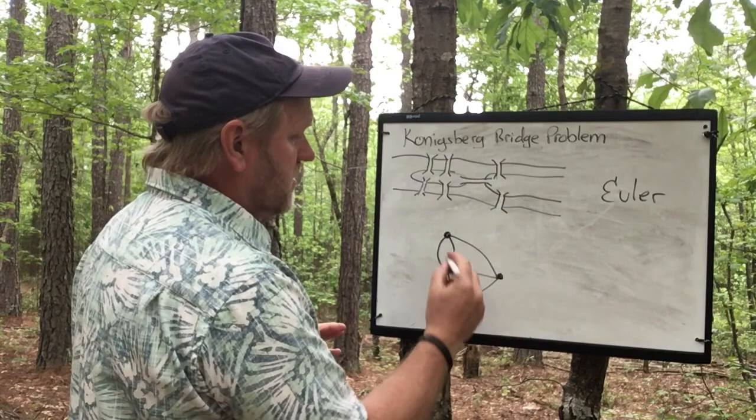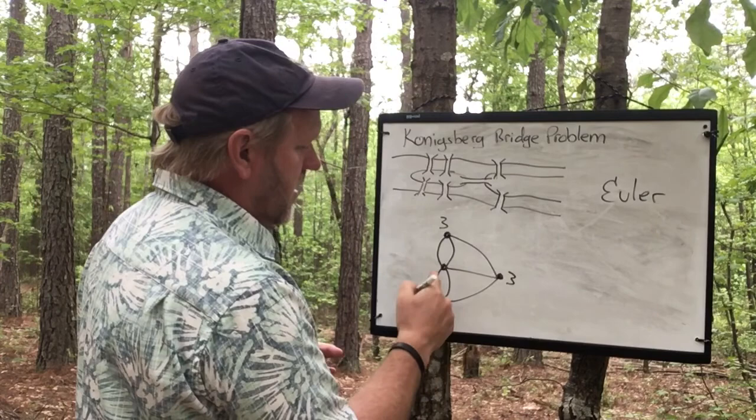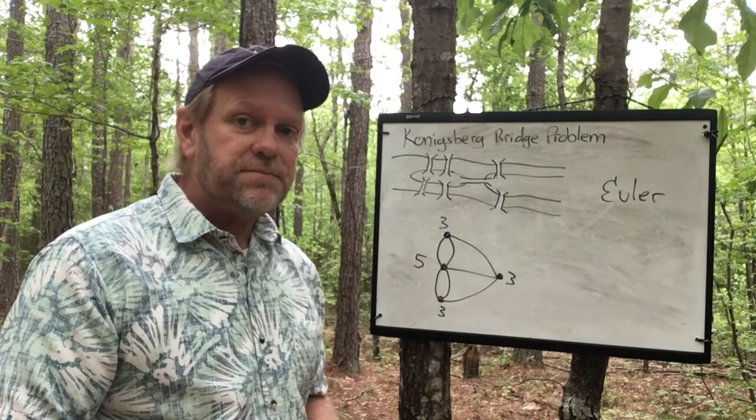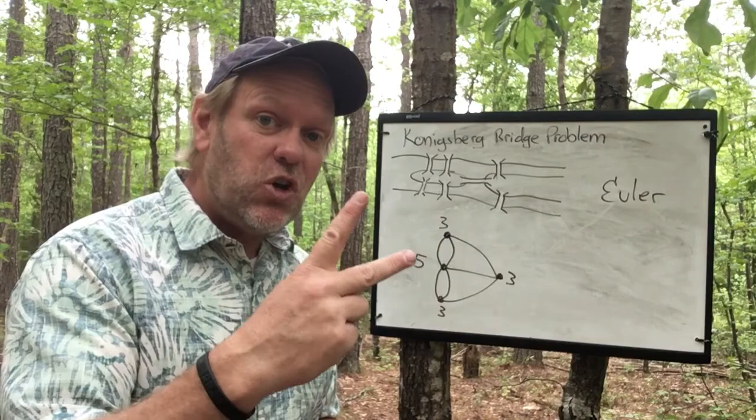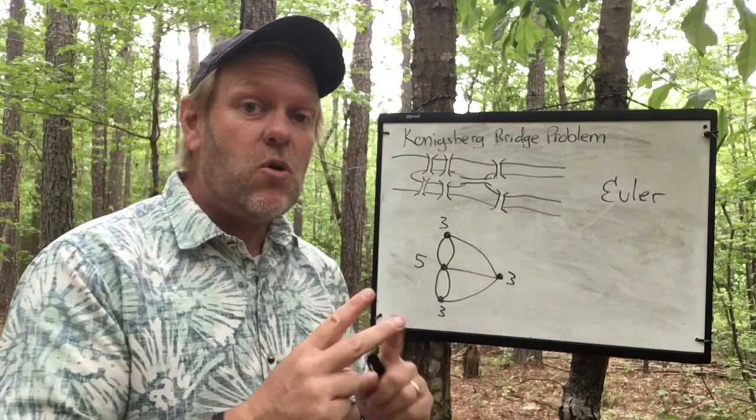What he found out was, in looking at the degree of each vertex, there are three that connect here, three there, three there, and five here. Notice that they are all odd numbers. You can't do it if they're all odd numbers — and that's what Euler discovered.